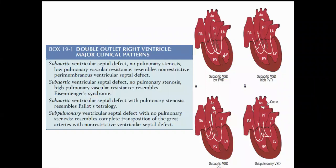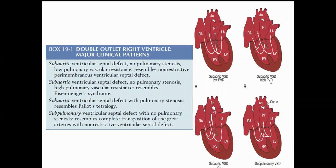This is the diagrammatic representation of the classification of DORV. The first type is a subaortic ventricular septal defect which does not have any pulmonary stenosis. It has low PVR, meaning the VSD is more confined towards the aorta and the flow of blood is more into the aorta. The subaortic VSD with no pulmonary stenosis and high pulmonary vascular resistance is also shown.